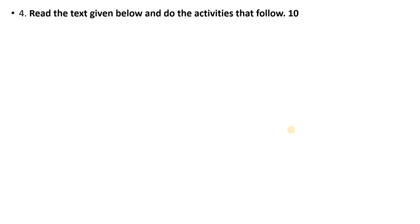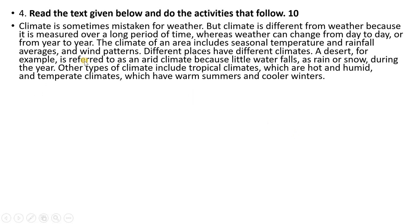Fourth reading test — read the text given below and do the activities that follow. It carries 10 marks. Climate is sometimes mistaken for weather, but climate is different from weather because it is measured over a longer period of time, whereas weather can change from day to day or from year to year. The climate of an area includes seasonal temperature, rainfall averages, and wind patterns. Different places have different climates. Desert, for example, is referred to as an arid climate because very little water falls as rain or snow during the year. Other types of climates include tropical climates, which are hot and humid, and temperate climates, which have warm summers and cooler winters.